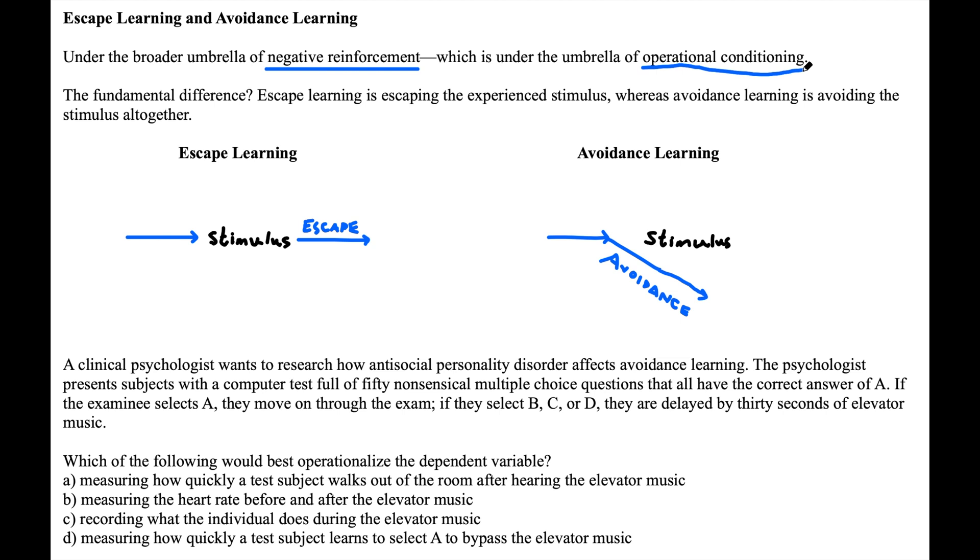So let's talk about the fundamental difference, something that isn't explained well very often. Escape learning is escaping an experienced stimulus, whereas avoidance learning is avoiding the stimulus altogether.